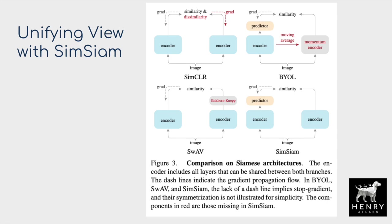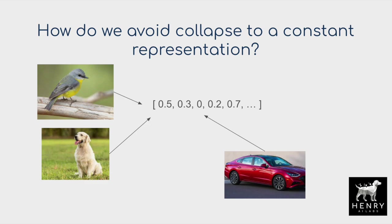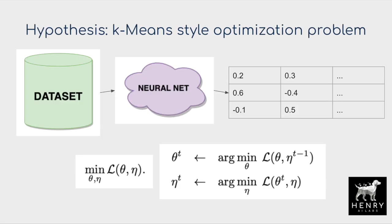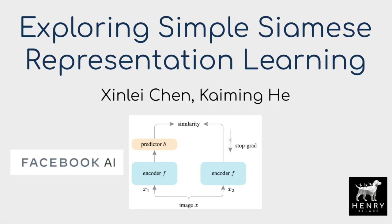What's the most important contributor to the success of contrastive learning? Is it negative batches, momentum encodings, or online clustering algorithms? This paper shows that the Siamese architecture is the core component. It's a great inductive prior to complement the prior of data augmentation and the idea of being invariant to small changes like rotations or increasing the brightness of an image. The paper also presents an interesting k-means style explanation of how contrastive representation learning works.